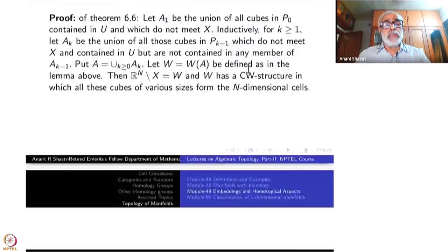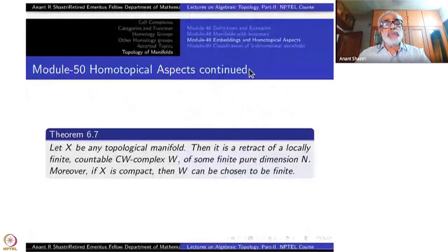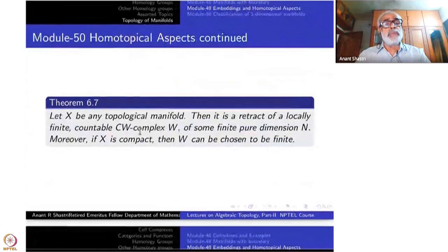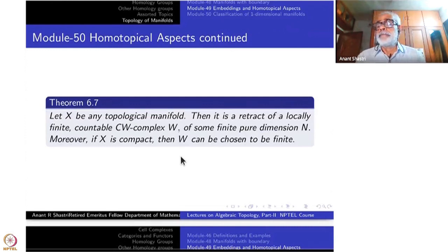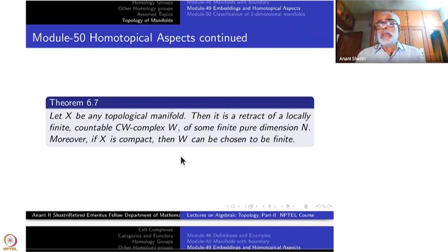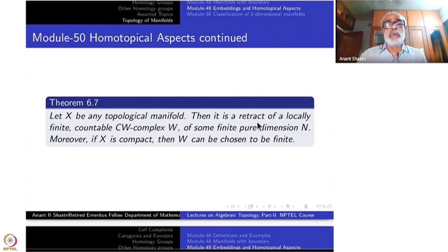Combining these two, we can do some homotopical aspects of the topology of an arbitrary manifold. So this is the first thing that we derive: let X be any topological manifold, then it is a retract of a locally finite countable CW complex of some finite pure dimension n. Moreover, if X is compact, then W can be chosen to be finite.